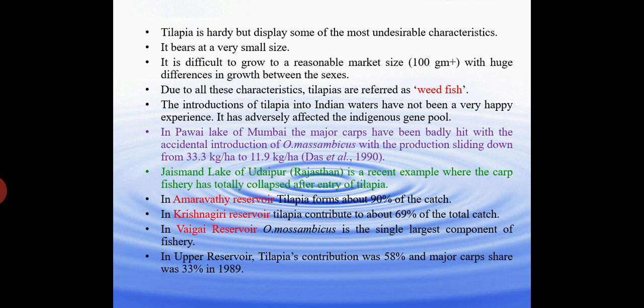Tilapia breeds at a very small size and it is difficult to grow to a reasonable market size, with huge differences in growth between the sexes. Due to these characteristics, tilapias are referred to as 'weed fish.' The introduction of Tilapia into Indian waters has not been a happy experience. It has adversely affected the indigenous gene pool. In Pavai Lake of Mumbai, major carps have been badly hit by accidental introduction of Tilapia. Similarly, in Jaisamand Lake of Udaipur, the carp fishery totally collapsed after entry of Tilapia.